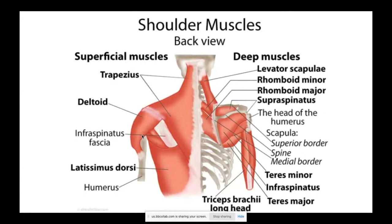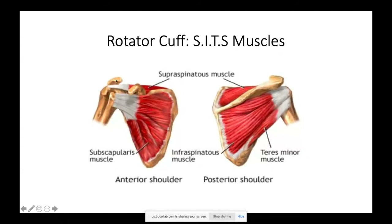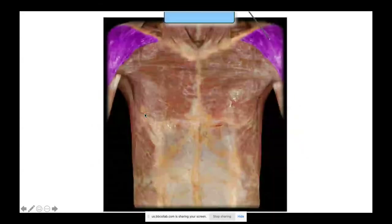Reviewing the rotator cuff: supraspinatus on top, infraspinatus, teres minor, and subscapularis. The first three insert on the greater tubercle; subscapularis inserts on the lesser tubercle. Right between the lesser and greater tubercle is the bicipital groove, where the long head of the biceps travels through. The coracoid process is where the coracobrachialis and short head of the bicep originate.